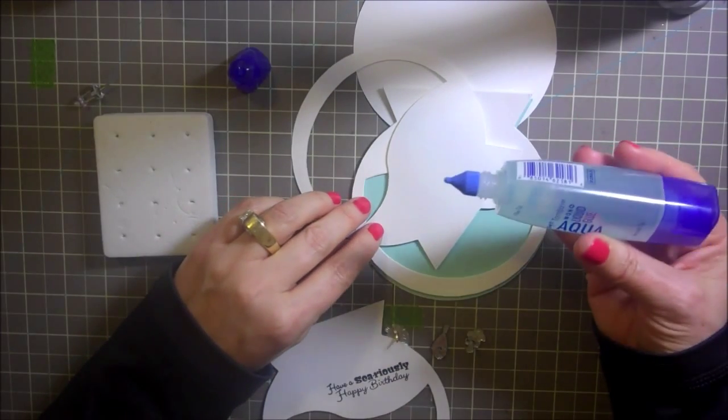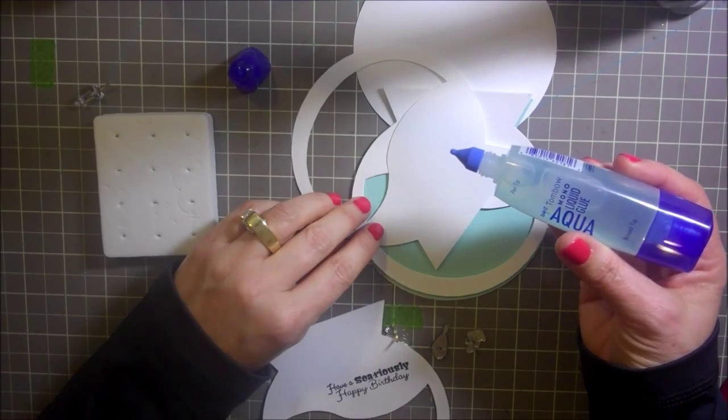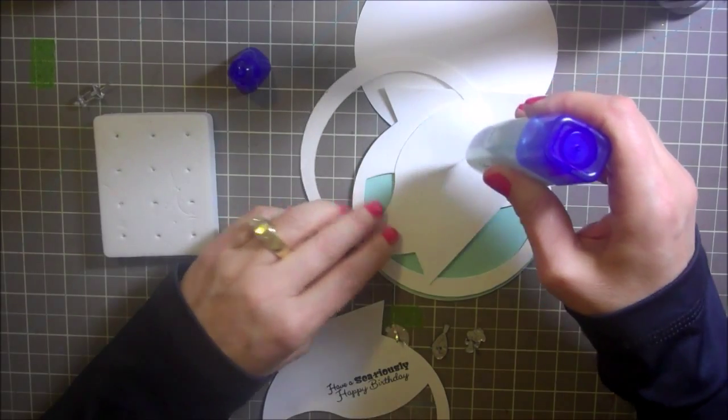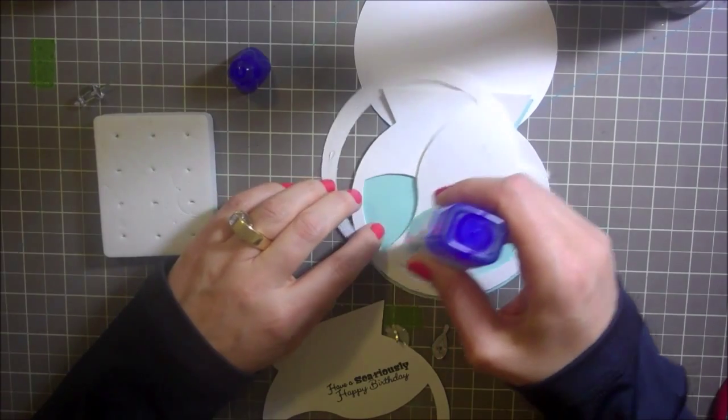So I've got this glue here that I got and it's called Mambo Mono Liquid Aqua. And I don't know what the aqua is about. I'm not sure what that's for, but anyway, that's just what it's called.